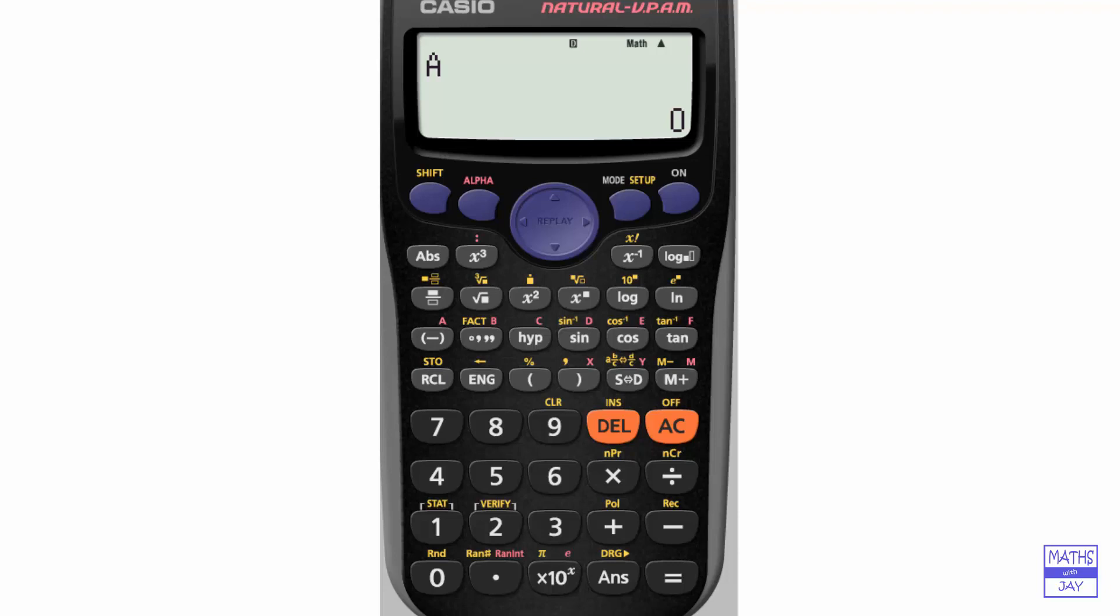There is a very special memory. We've got loads of memories here: A, B, C, D, E, F, X, Y and M. The last one you can see is unusual because the key that's got the M on it has also got M plus and M minus. Let's do something really simple here. Let's just put 3 in memory M. So we've put 3 in memory M.